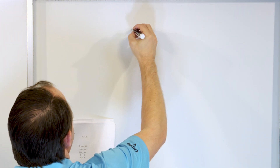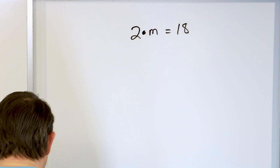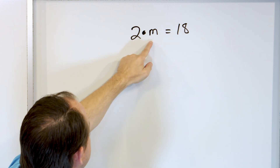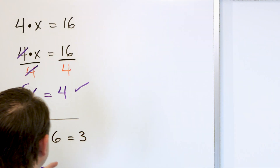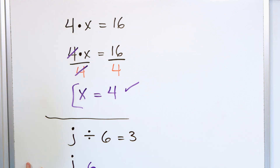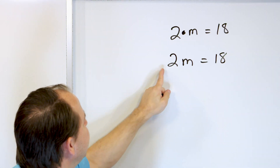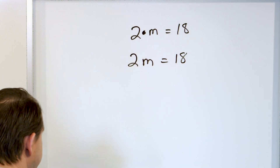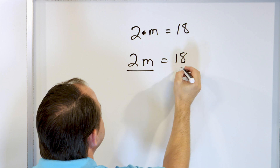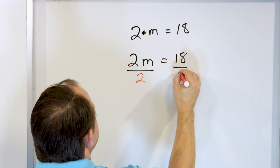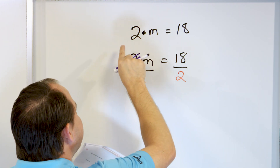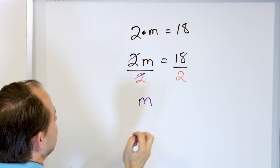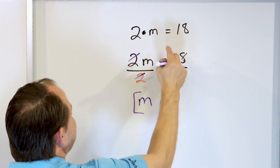Now we can just get so much practice that you'll be fluent. 2 times m is equal to 18. Notice I've been writing the dot between them, but we already know we don't have to put the dot — if I write 2m equals 18, it means multiplication. So 2m equals 18. We have to undo the multiplication by dividing both sides by 2. We have a 2 on the top and a 2 on the bottom — they divide away. 2 divided by 2 is 1, so it goes away, leaving just m. 18 divided by 2 is 9. Check your work: 2 times 9 is 18. Correct.